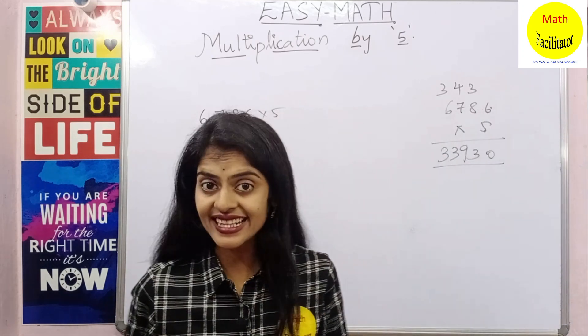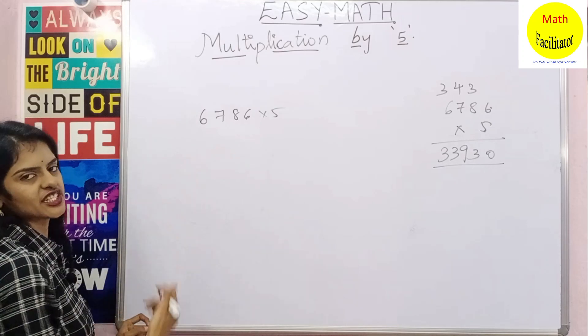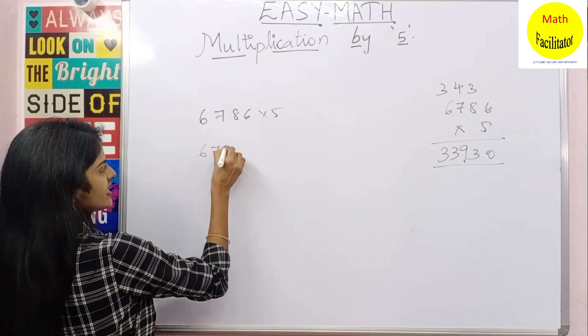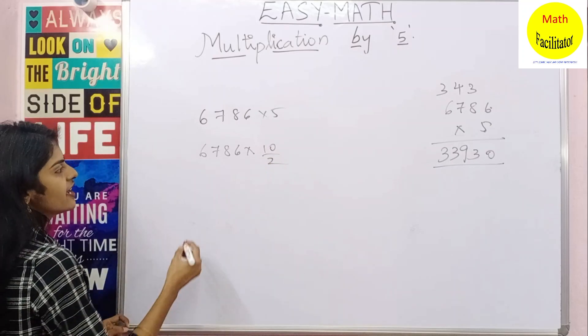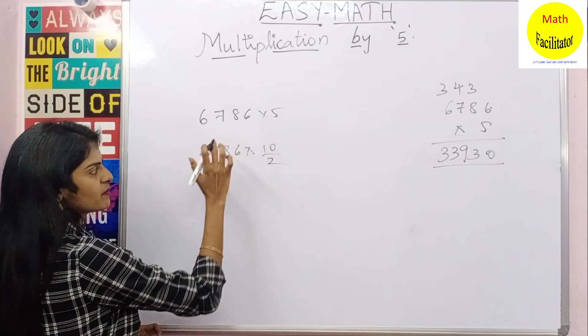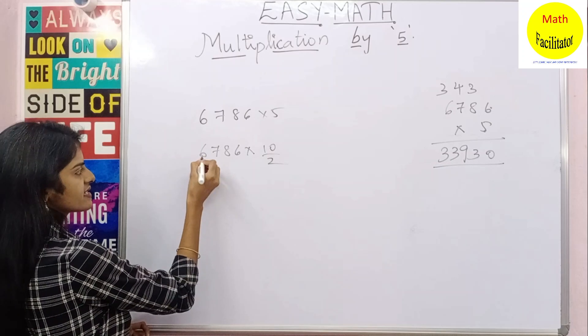At least. Now let us see this method. So it is 6786 into 10 by 2 simply. You have to divide this number by 2. That means this is nothing but...